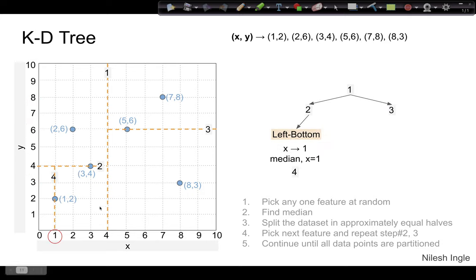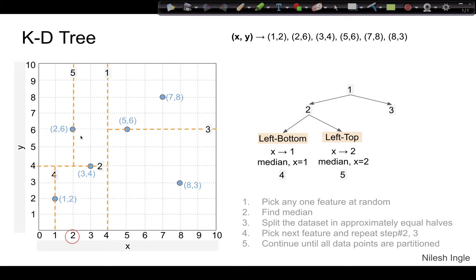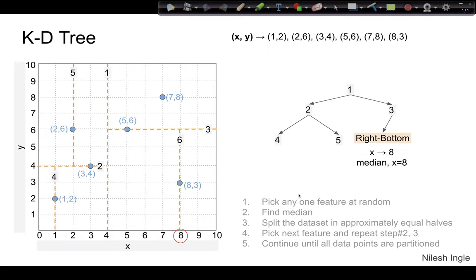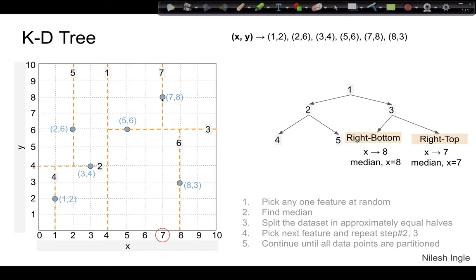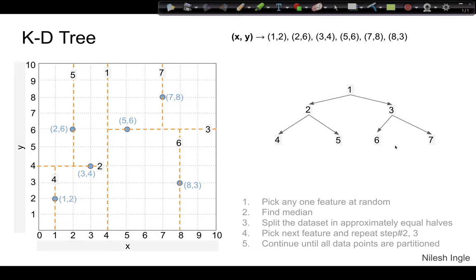We continue this process further. The bottom-left side is divided again by partition 4, the top side by partition 5, the bottom-right by partition 6, and the top-right by partition 7. That's how we get the KD tree shown on the right-hand side.